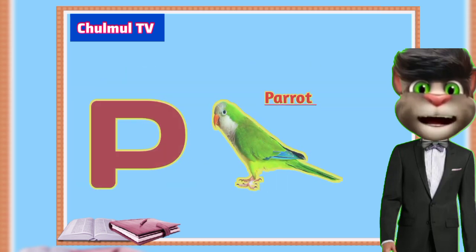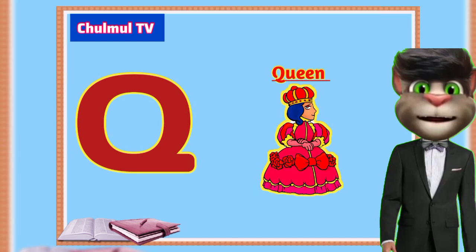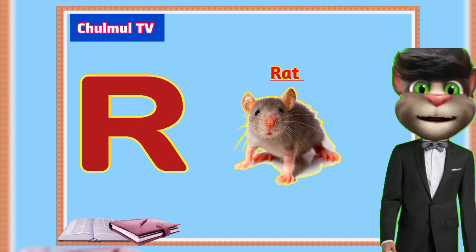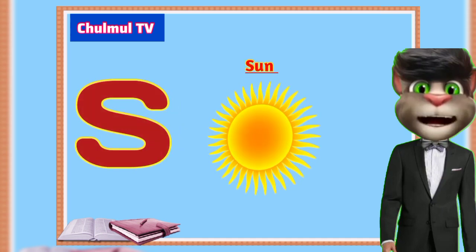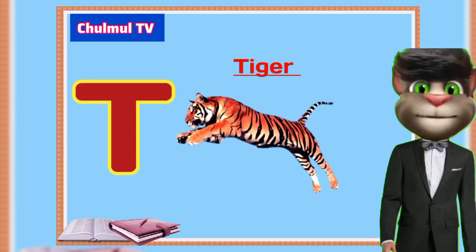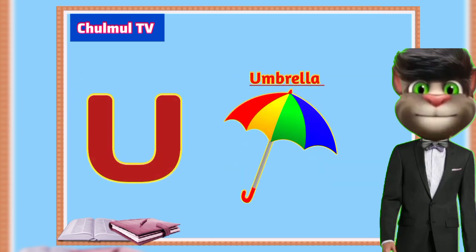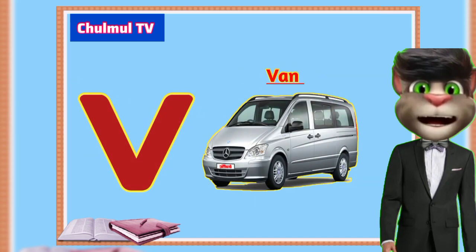P for parrot, Q for pet, R for red, S for sun, T for tiger, U for umbrella.